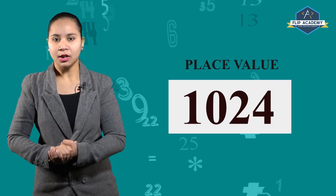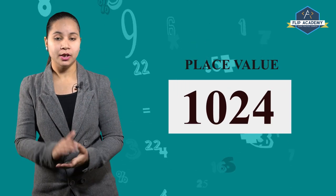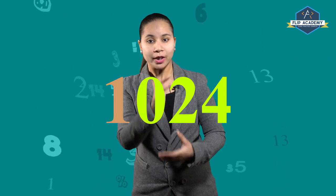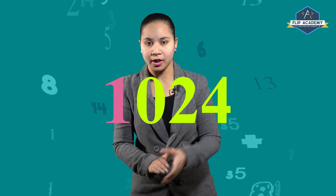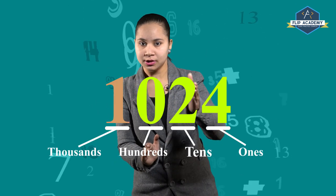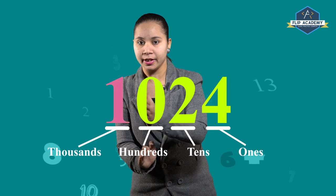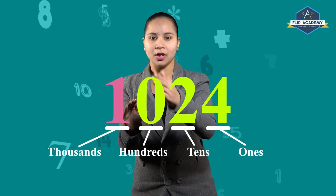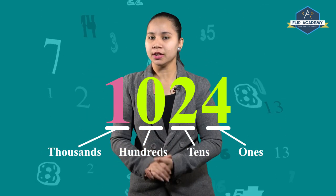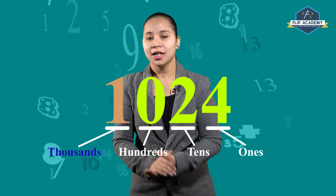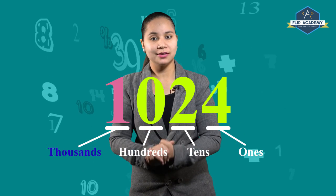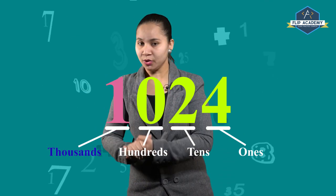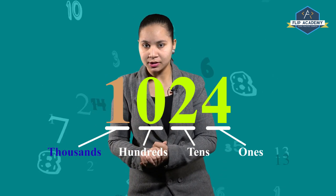For example, take 1024. What is the place value of 1 here? The place values are 1, 10, 100, and 1000. So the place value of 1 is 1000. So with the existence of 0, we also came to know about place value.